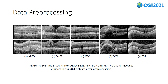Figure 7 shows example B-scans from AMD, DME, NM, PCV, and PM ocular disease subjects in our OCT dataset after pre-processing. It can be seen from the figure that the data pre-processing removes interference noise and corrects the curvature of the retina itself, which is helpful to improve the accuracy of subsequent classification tasks.